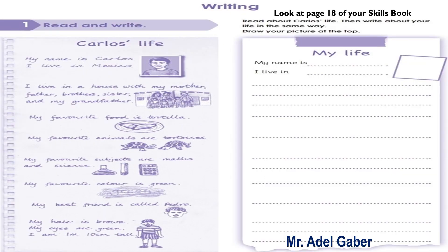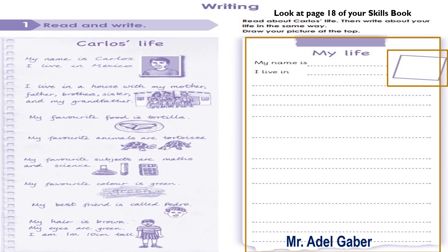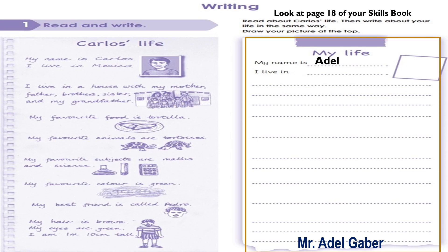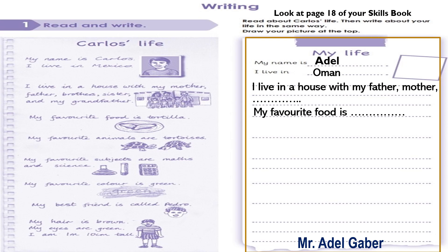Look at the section on the right of the page with the heading My Life. You are going to write sentences and draw pictures about your own life using the information Carlos has written about himself to help you. Use the same topics and sentence structure as Carlos has used but substitute information about yourself. For example: my name is Adel — write your name. I live in Oman. I live in a house with my father, mother, and so on. My favorite food is so and so. Now write about yourself the same way.